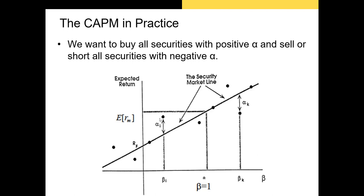So this security I outperformed the market by some positive amount. This security, let's call it security K, underperformed the market for its level of beta — its level of undiversifiable risk. In other words, these alphas tell us whether or not a stock outperformed or underperformed the market. Now, if the CAPM were true, all of these alphas would be zero and these points would just be directly on the security market line because the CAPM would perfectly predict actual stock returns. However, in the real world, the alphas are either positive or negative.